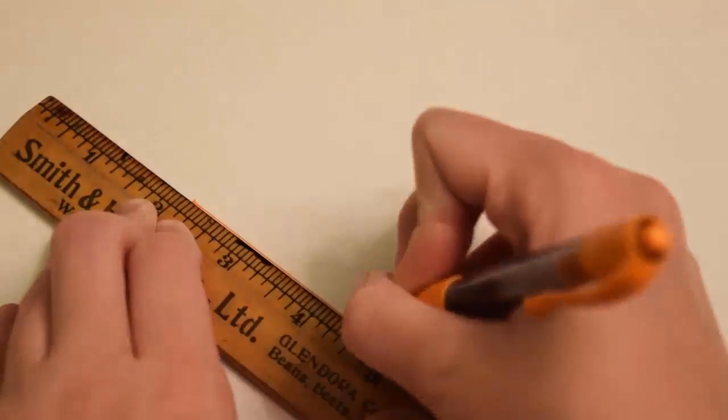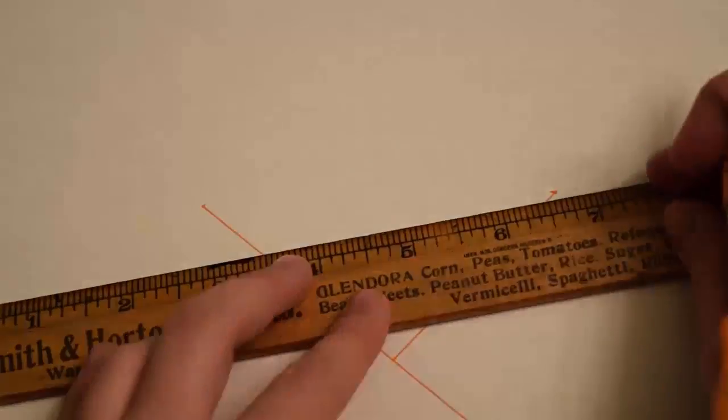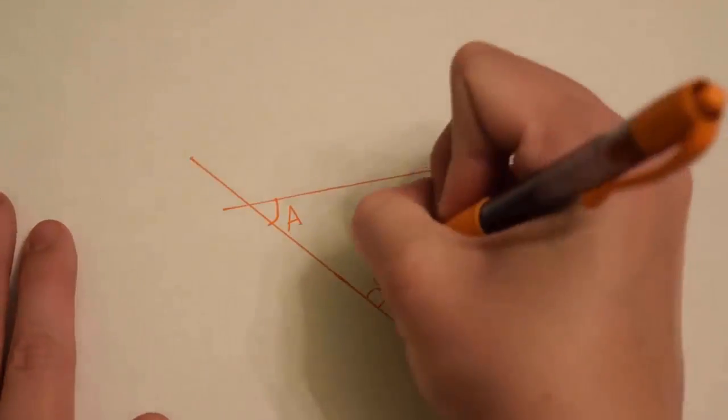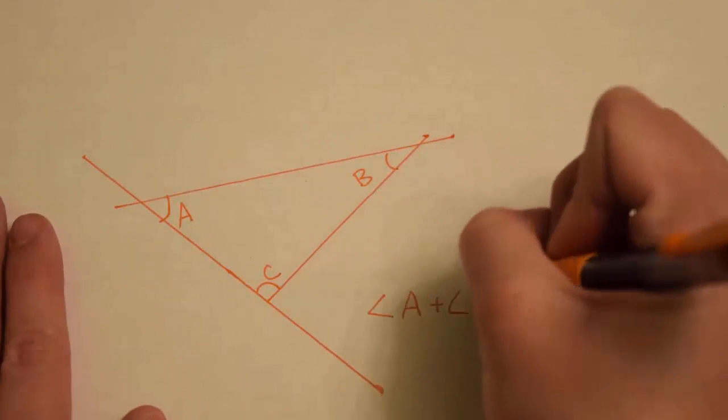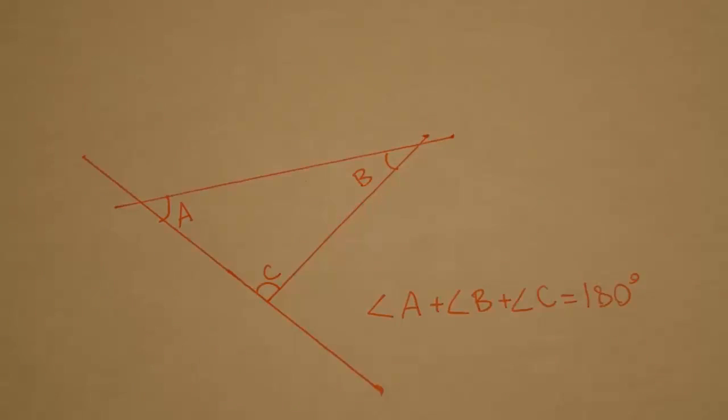This fifth postulate is used to prove many theorems, but one thing that will become important to us is the theorem that states that the measure of the angles of any triangle always add up to 180 degrees.